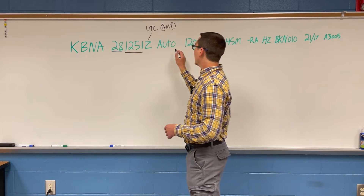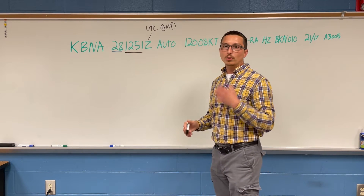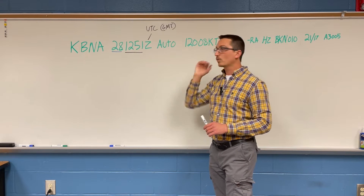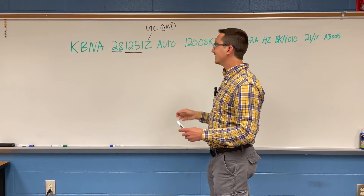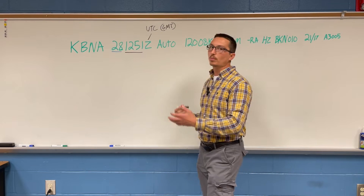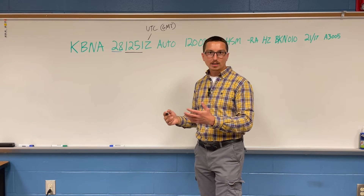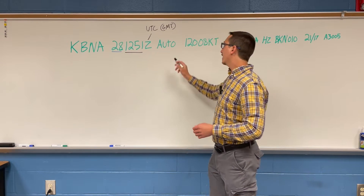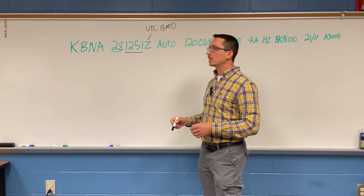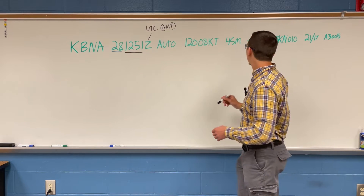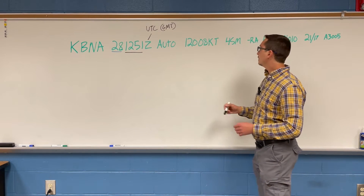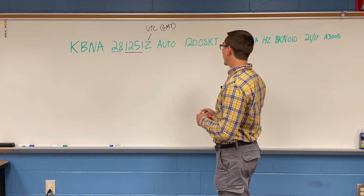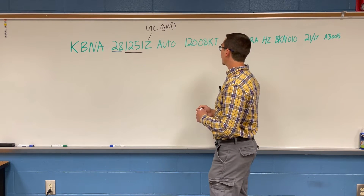The next section just says the report was automatically generated. At airports, these METAR reports are automatically generated. Sometimes there are METAR reports that are not automatically generated — for example, if there's a correction. I don't always see this on the tests, but I just wanted to show it. So AUTO means automatically generated.